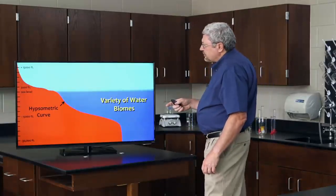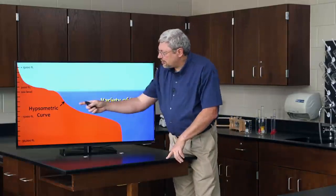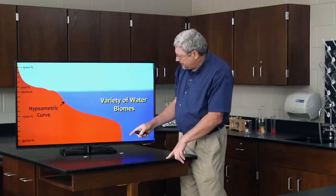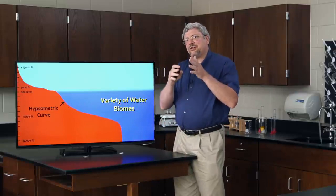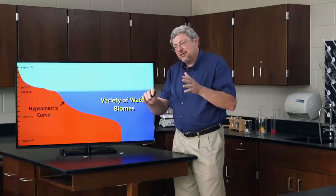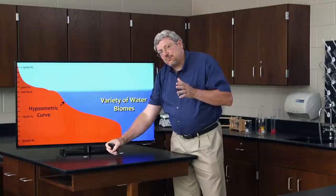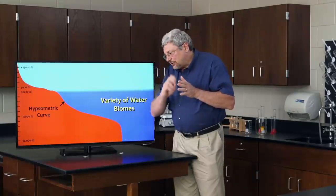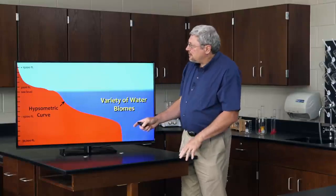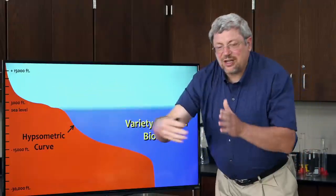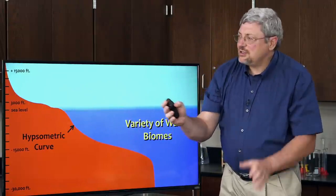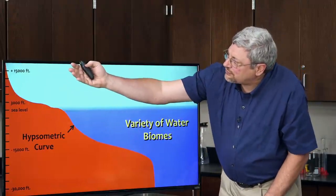This particular illustration is showing what we call the hypsometric curve. If you took all of the altitudes above sea level and the depths beneath sea level for the rocks of the earth and asked yourself, what area of the earth's surface is above, let's say, 15,000 feet?